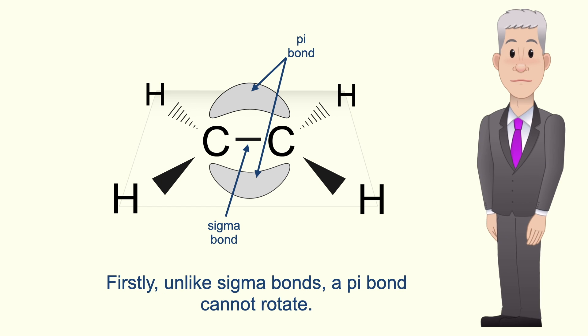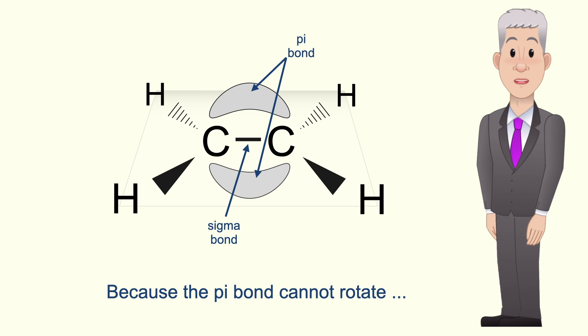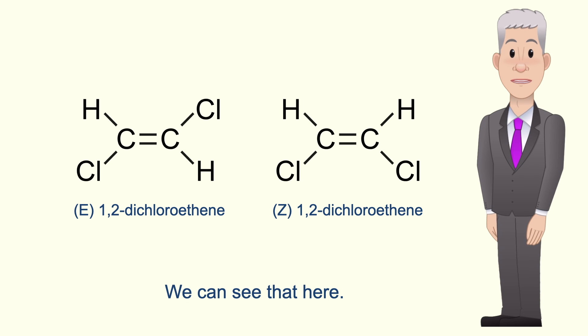Firstly unlike sigma bonds a pi bond cannot rotate. That's because any rotation would reduce the overlap of the p orbitals. Now because the pi bond cannot rotate this means that the structure of an alkene across the double bond is effectively locked. We can see that here.